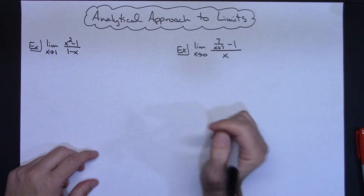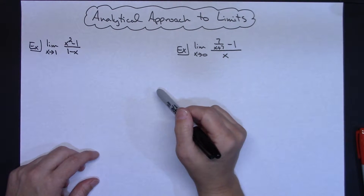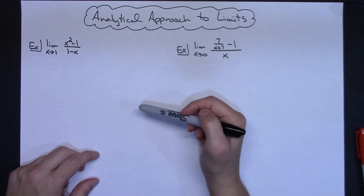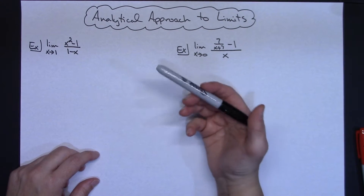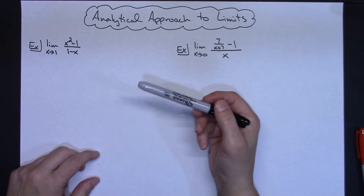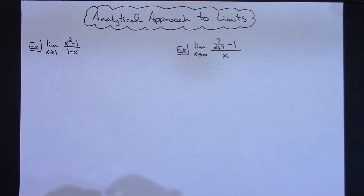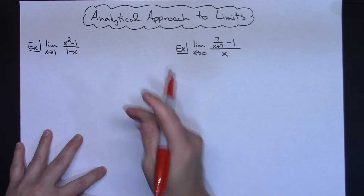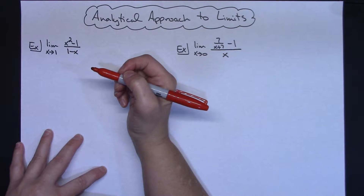In this video, I'm going to take a look at an analytical approach to solving limits. I'm going to do about three examples, and they're going to be very common analytical approaches to limits. My first example is the limit as x approaches 1 of x squared minus 1 over 1 minus x.